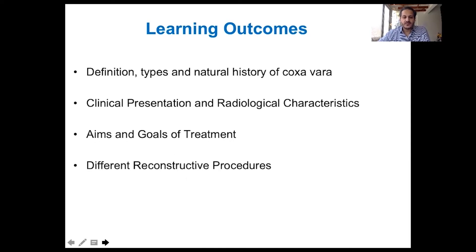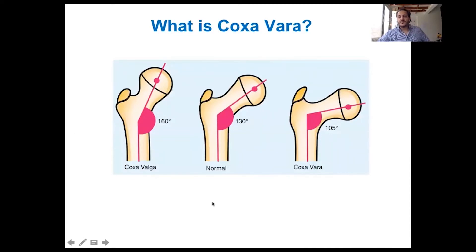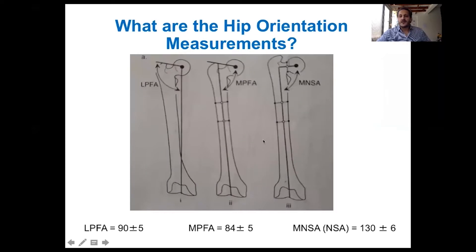So what is coxa vara? Coxa vara is any decrease in the normal neck shaft angle. The normal angle is around 130 degrees. The decreased angle is called coxa vara; any increase in the angle is called coxa valga. The neck shaft angle is the angle between the anatomical axis of the femur — the line bisecting the diaphysis of the femur — and the axis of the neck. It is normally around 130 degrees.